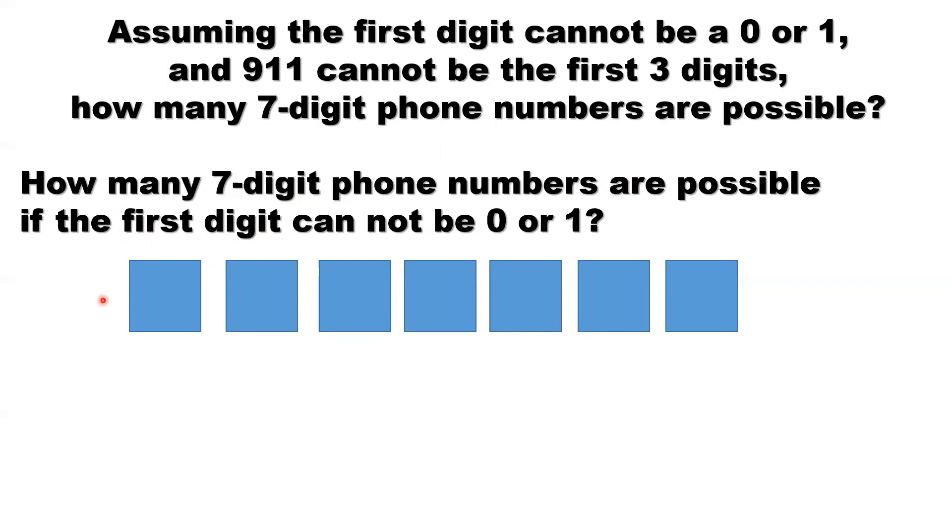Let's find out the answer first. So now here, look at the first digit. Each digit, you have 10 numbers to pick from, from 0 to 9. But the first one cannot be 0 or 1. So you only have 8 possibilities for the first digit.